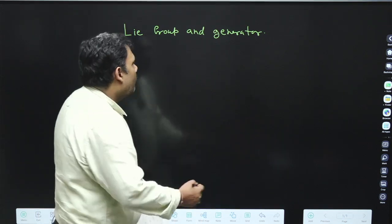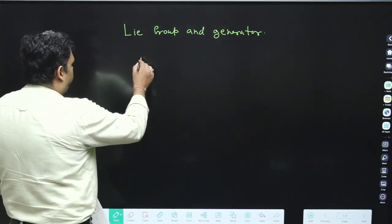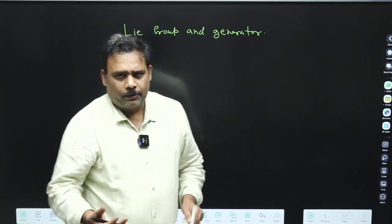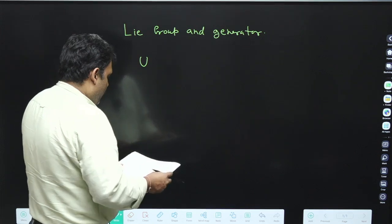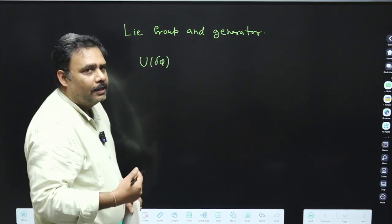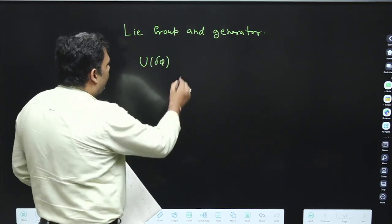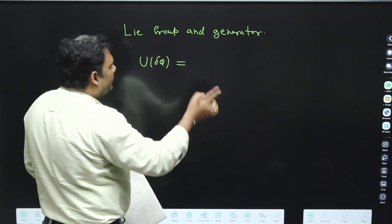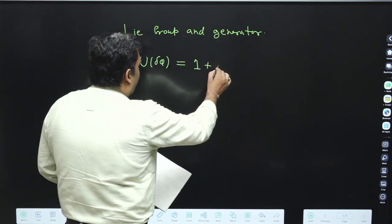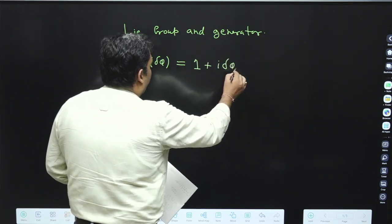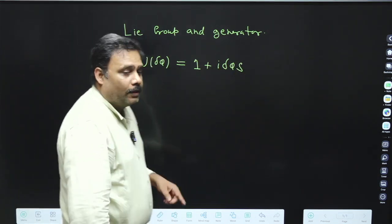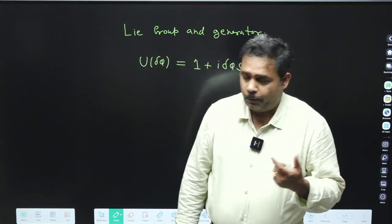These are unitary groups. The Lie group is basically a subgroup of the unitary group. You can define it with some parameter δφ, where δ is very small. Then you can write this as its generating function: identity plus i·δφ·S, where S is the generator of this particular unitary group — that is your Lie group.